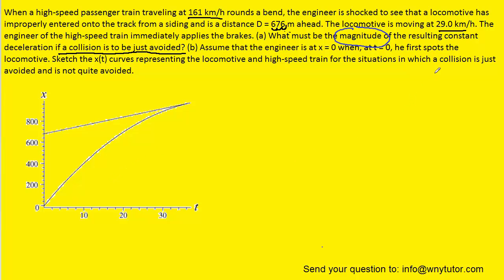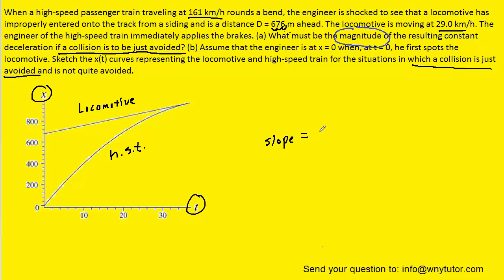For part B, to sketch a position-time graph for the situation in which a collision is just avoided: the top straight line represents the locomotive moving at constant velocity. The more curved line represents the high-speed train (HST), which is decelerating. The slope of a position-time graph gives velocity, so the locomotive has a constant slope. The high-speed train's slope is very steep initially and flattens out progressively, reflecting its decreasing velocity as it slows down.